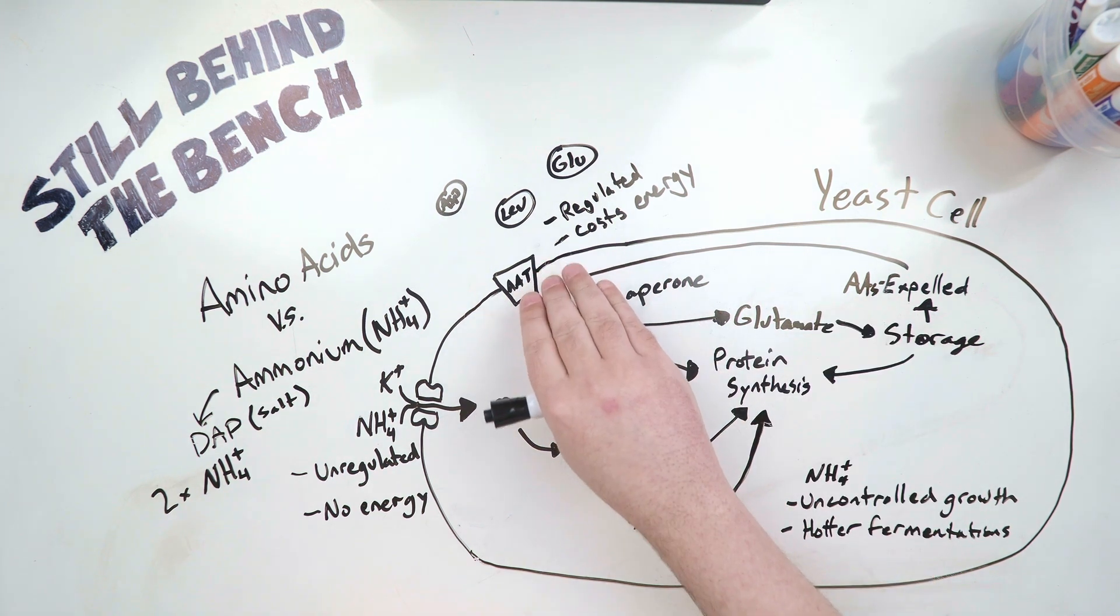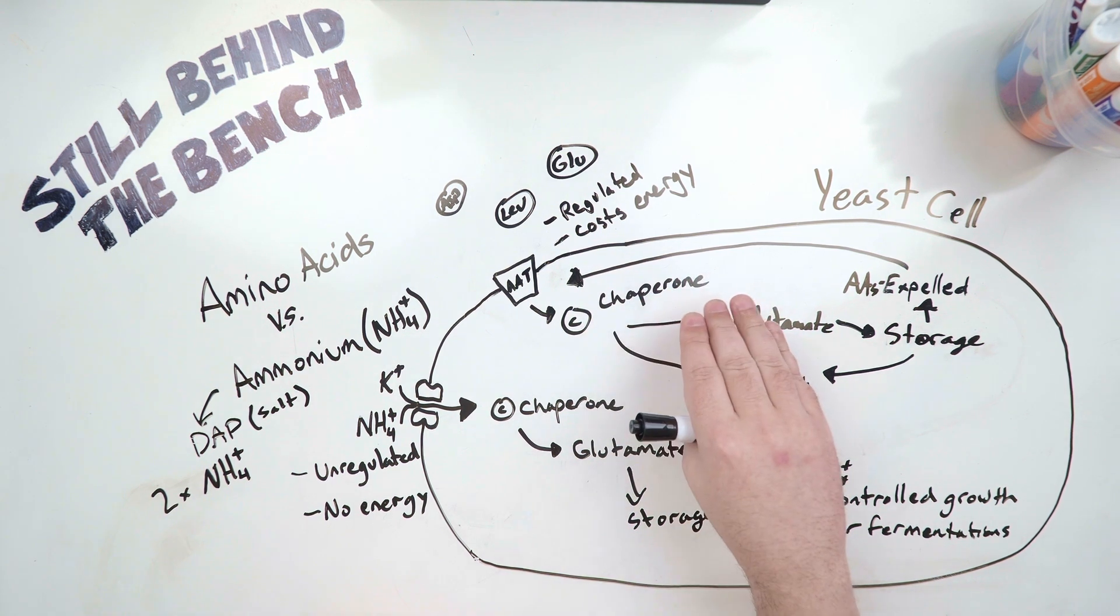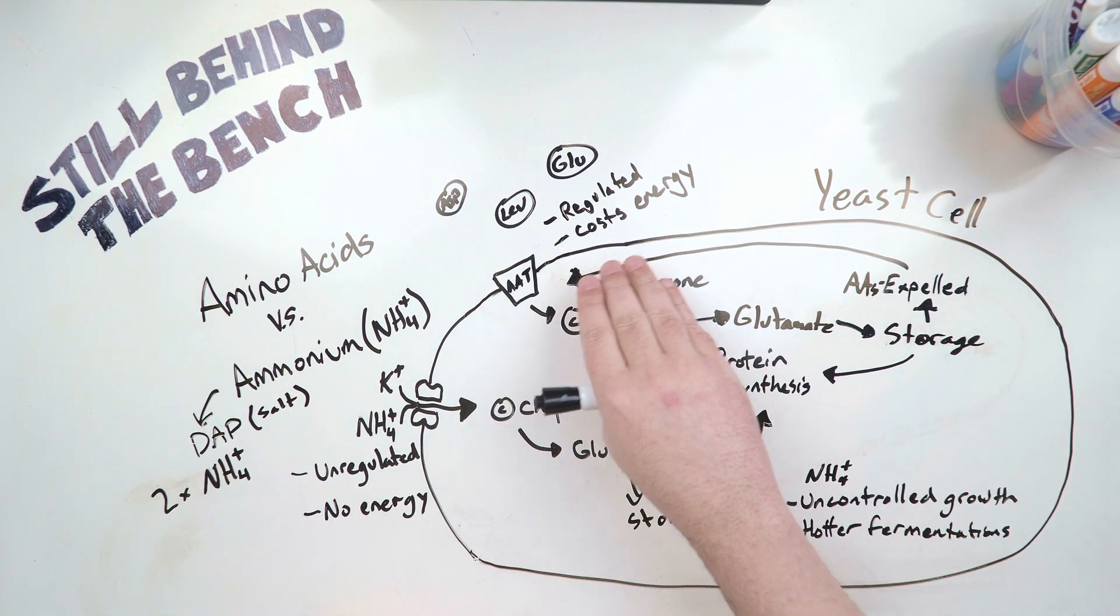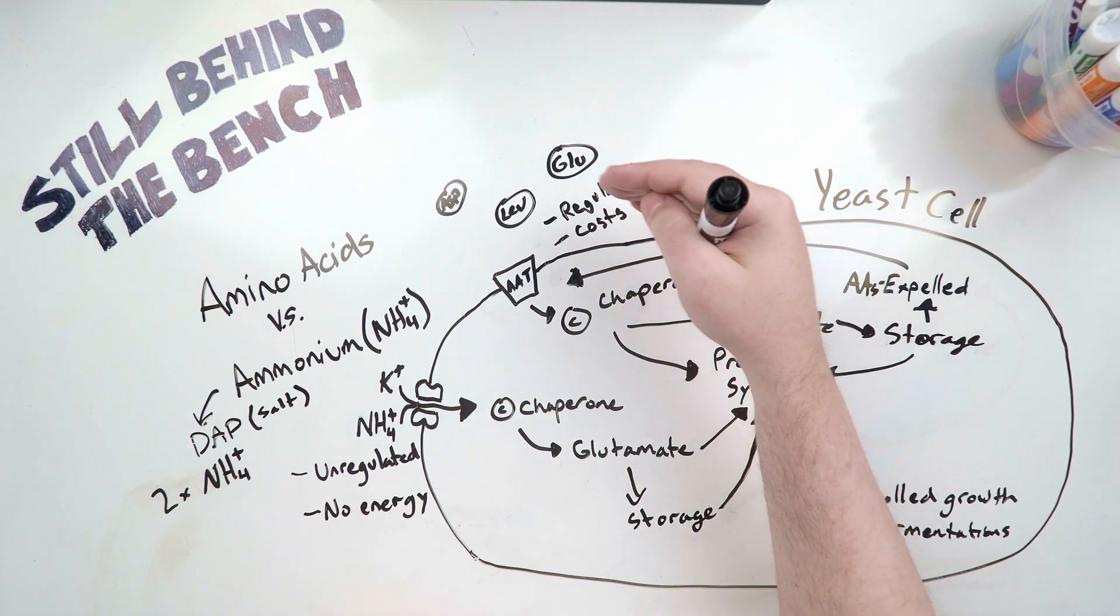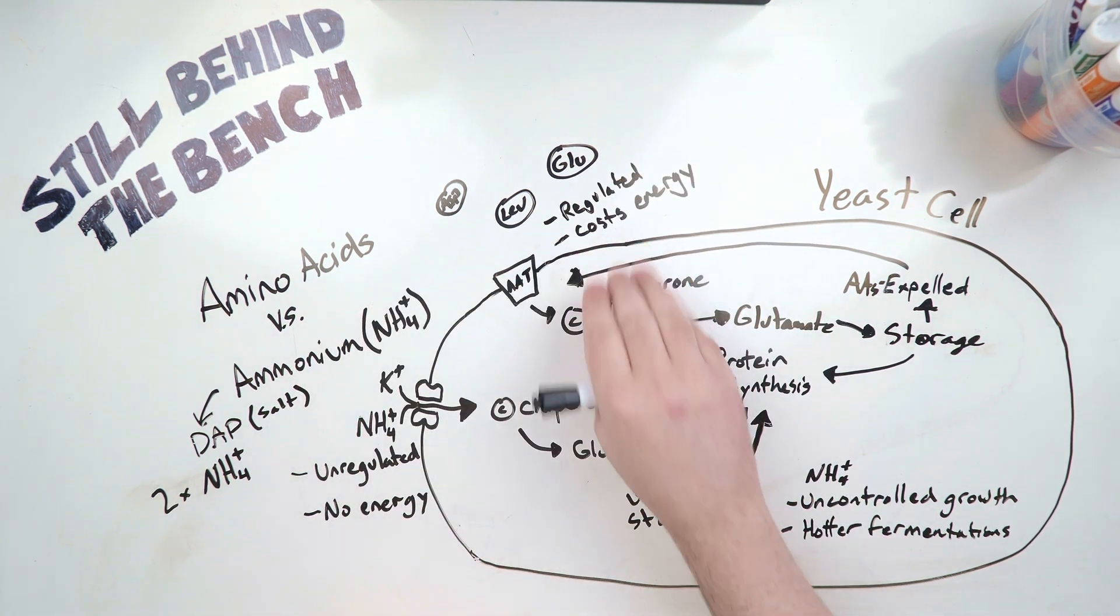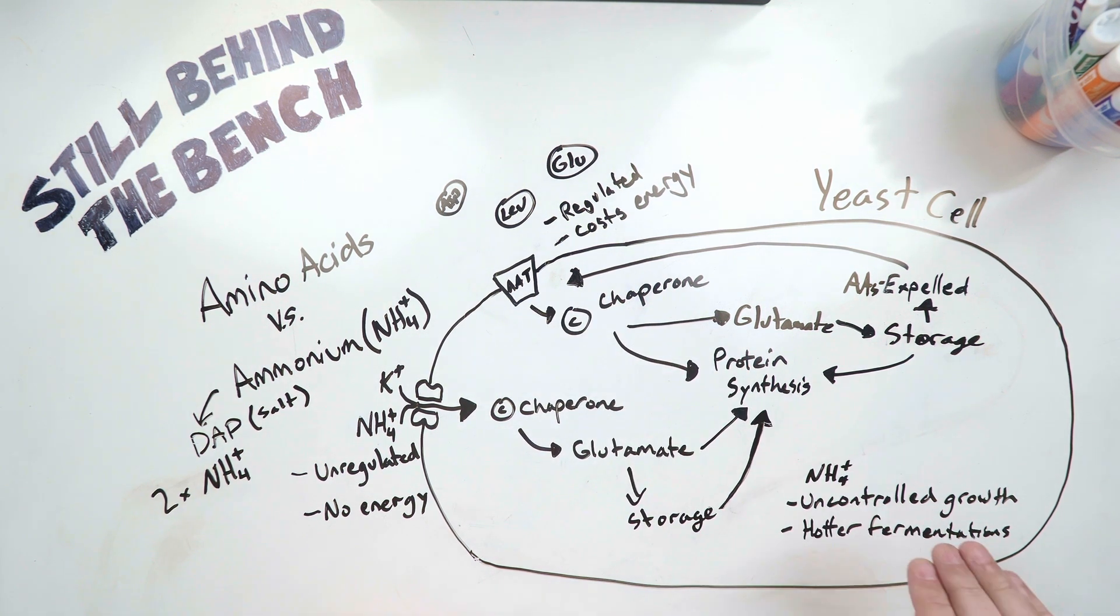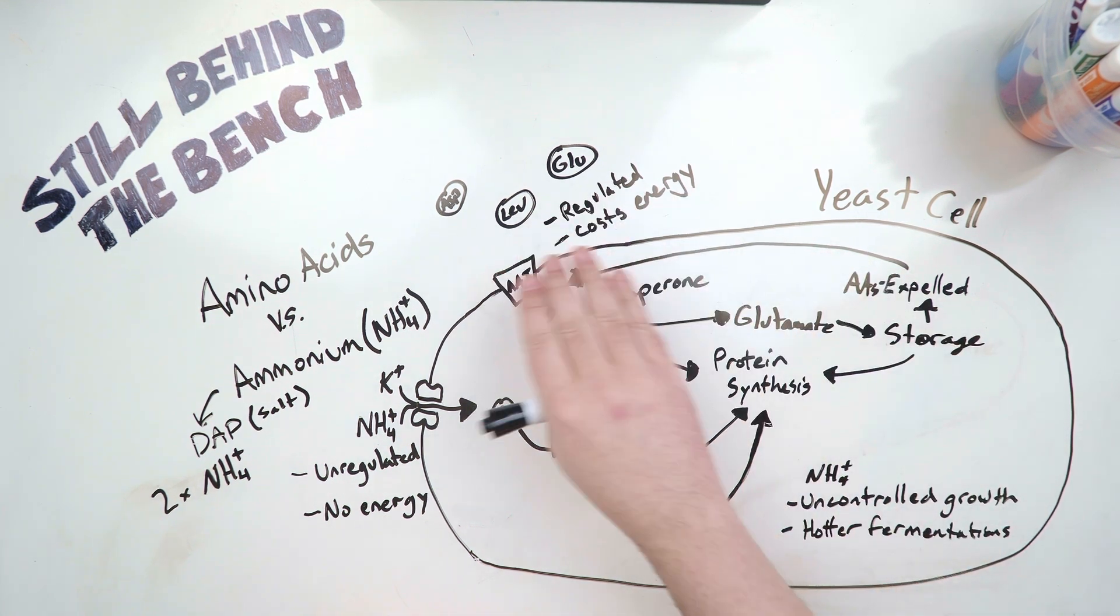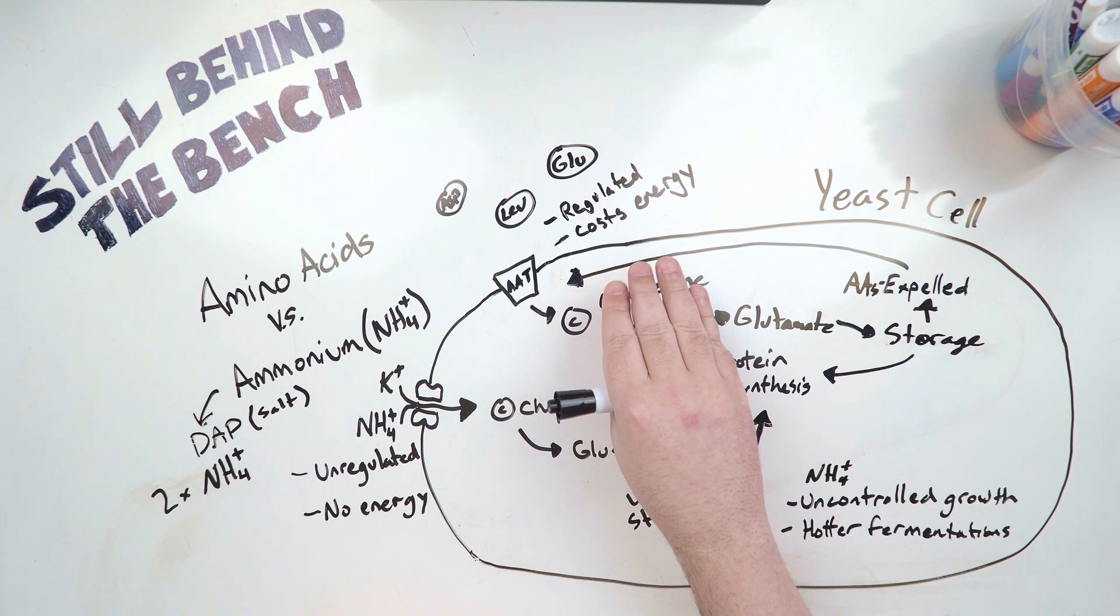This method of intake for amino acids is regulated, so it'll only happen when the yeast doesn't have excess nitrogen, and it also costs the cell energy to bring that amino acid inside. This is why using amino acids as a nitrogen source is a slower process. So you don't end up with uncontrolled growth, and you won't have as much of an issue with heat generation. That's why generally speaking, it's considered that amino acids are a healthier alternative for a nitrogen source.